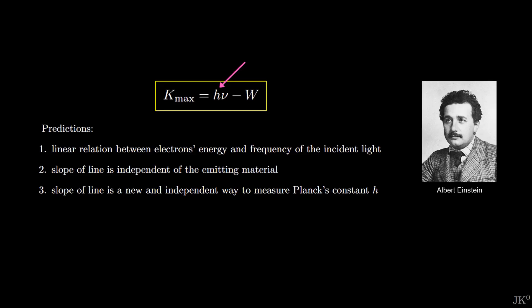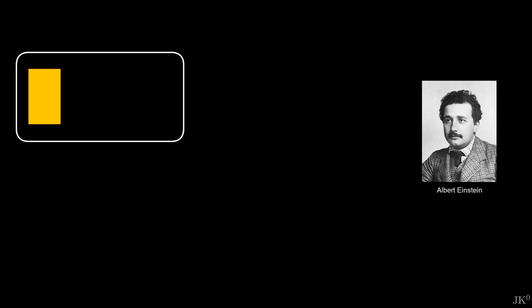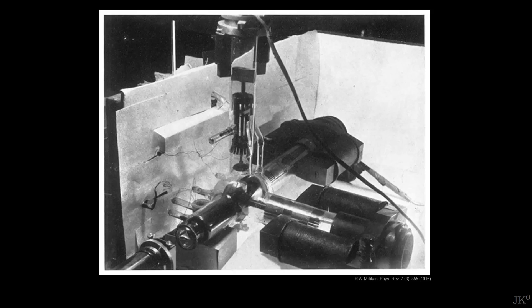Millikan decided to experimentally test Einstein's formula for the photoelectric effect because this would allow him to disprove the three predictions at once. The method was in principle very simple. According to Einstein, when shining light of frequency nu over a metal, the photoelectrons are ejected with a maximum kinetic energy given by a linear function of the light's frequency. On the contrary, the actual experimental apparatus was a technological miracle.